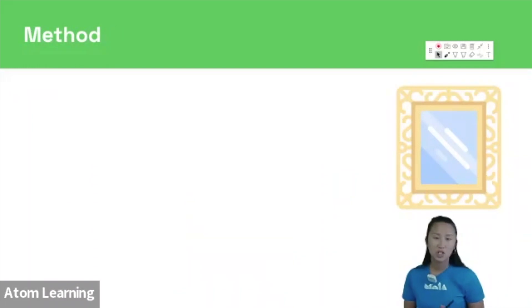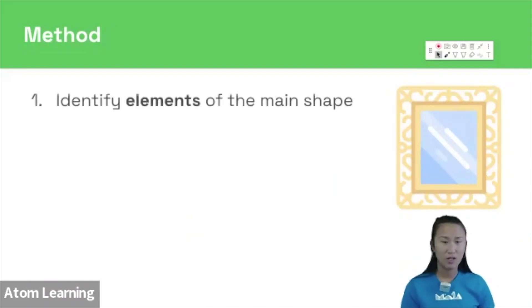Moving on to our method now. Number one, read the question carefully. Then identify elements of the main shape. Think about color, shape, number, patterns, positioning.